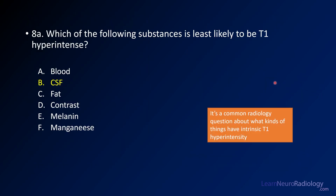The first question was: which of these is least likely to be T1 hyperintense? Blood, fat, contrast, melanin, and manganese — manganese is a paramagnetic metal just like gadolinium, and can be T1 hyperintense as well. So CSF is the correct answer there.